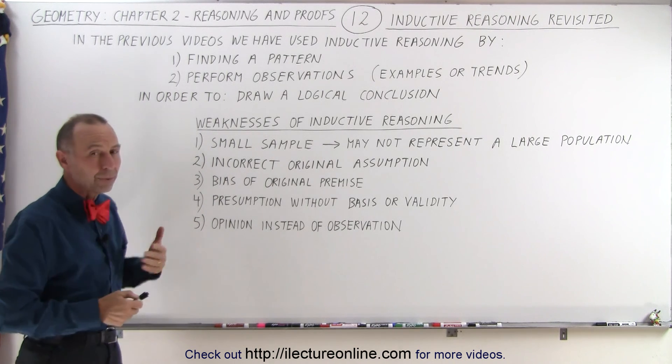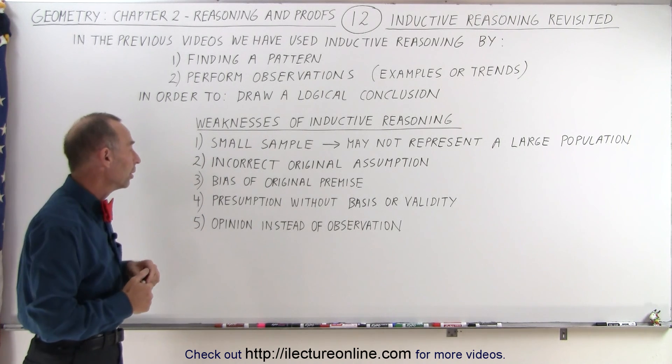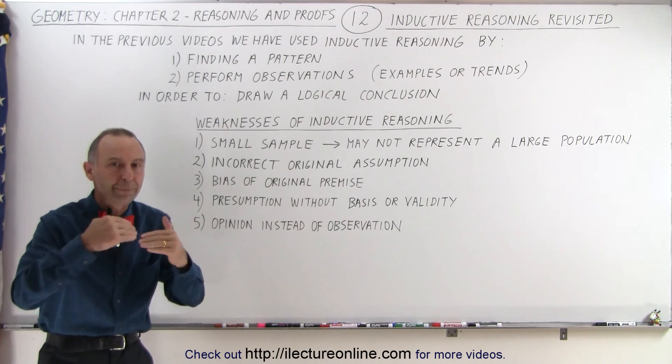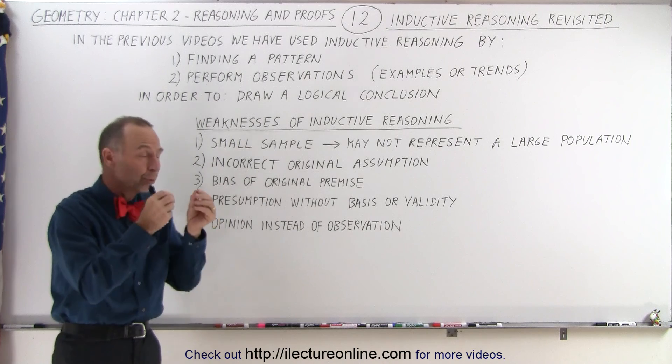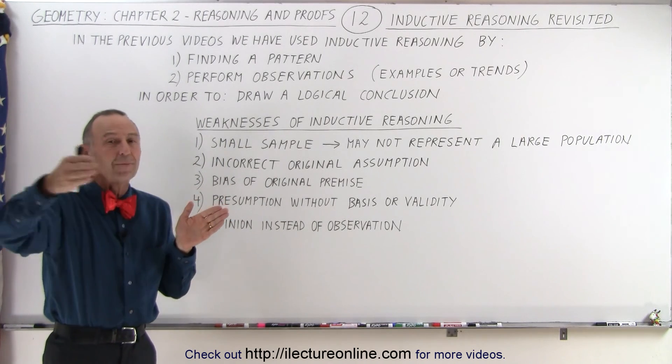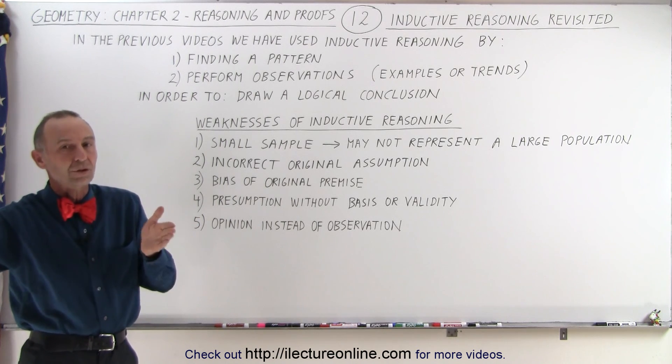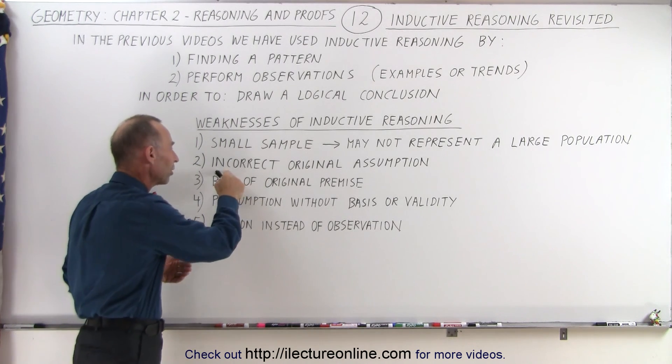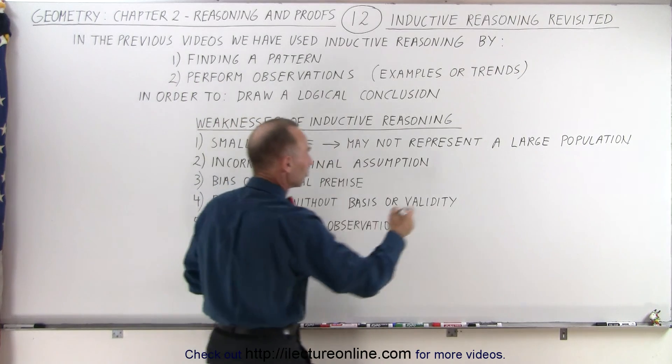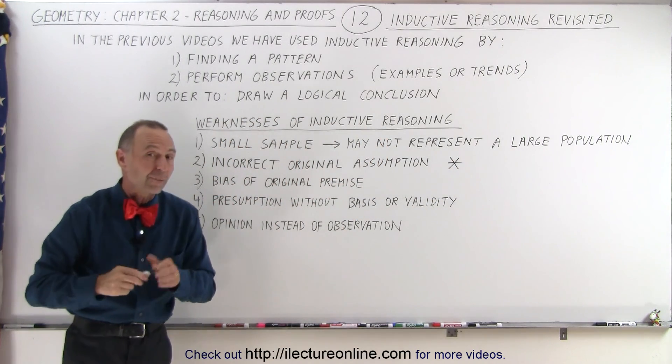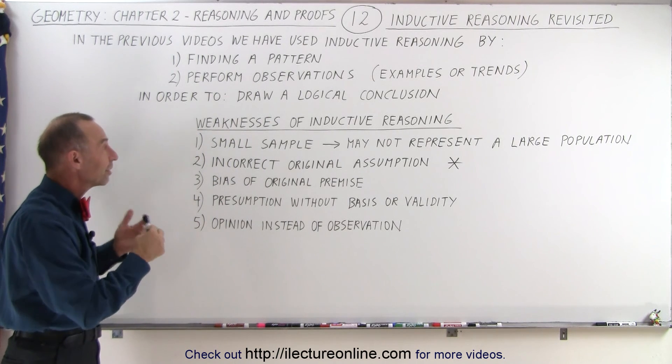The second one here is probably the biggest one of them all. Starting with an incorrect original assumption and then building the case up from that. If the original assumption is not correct, everything else that comes after that, even though it may be correct, cannot possibly lead you to the correct solution if we started with the incorrect original assumption. So I would say that's probably the most prevalent and the most important weakness of inductive reasoning.